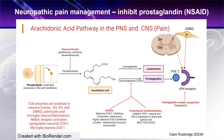The COX enzymes are localized specifically in the cortex, in the dorsal horn, the ventral horn of the spinal cord, and the dorsal nerve root ganglion of the peripheral nerve. We also have COX enzymes in the astrocytes, which are some of the supporting cells of the nervous system, and in the microglia, which are very important in neuroinflammation.